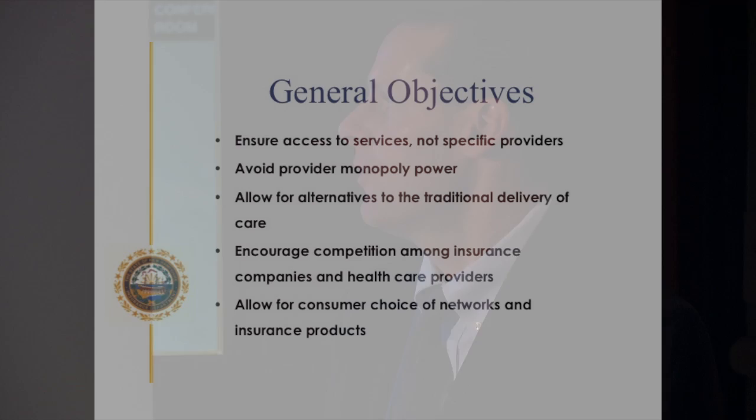We want to allow for consumer choice of networks and insurance products. With any network adequacy requirement, we're setting a minimum standard that applies to a very diverse set of purchasers. Some people are managing chronic conditions and need routine access to specialists and primary care providers. Other folks are buying insurance because they have to — they don't plan to use their benefits, they don't mind traveling if they do need healthcare, and they really want the cheapest insurance product.